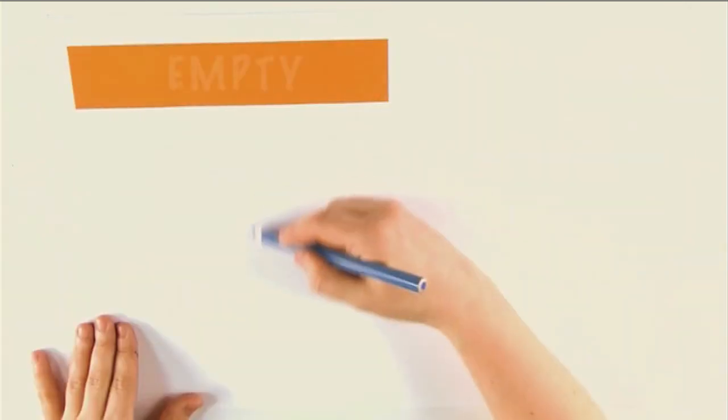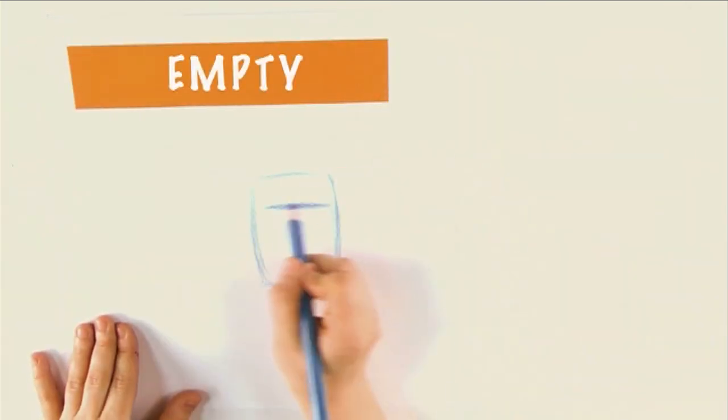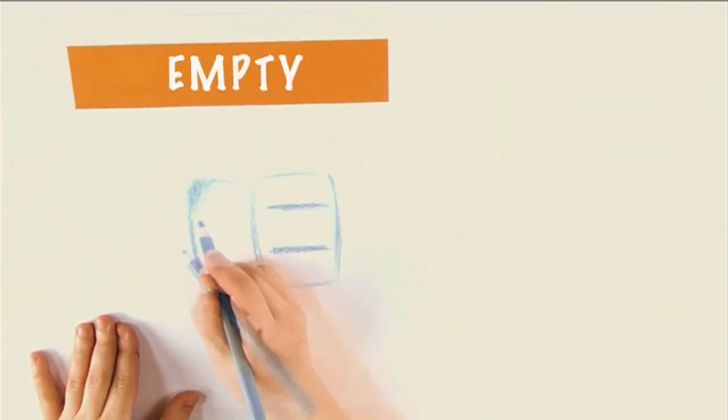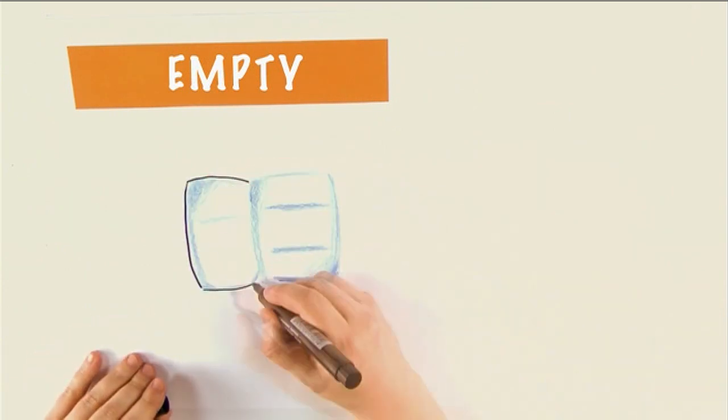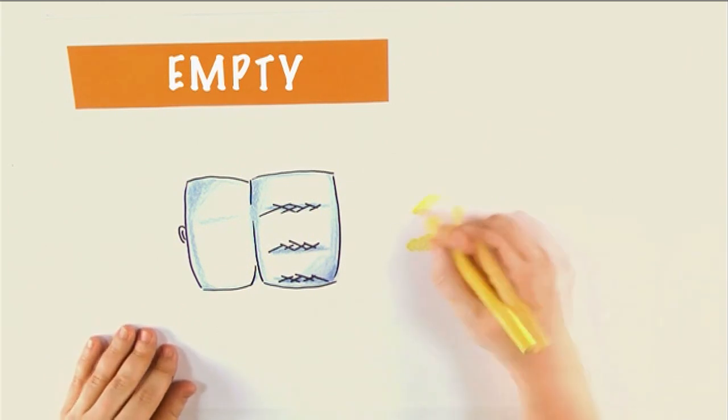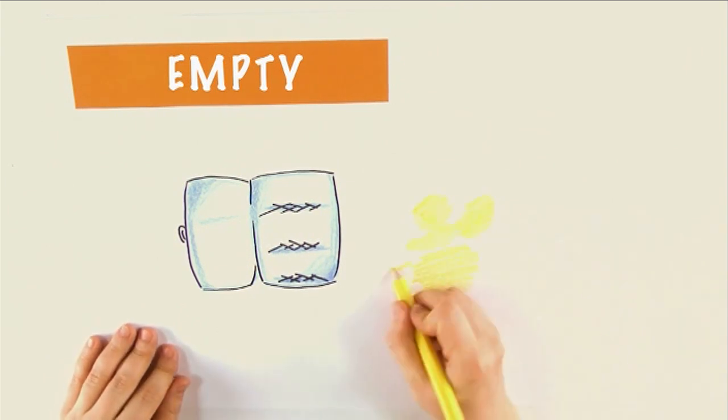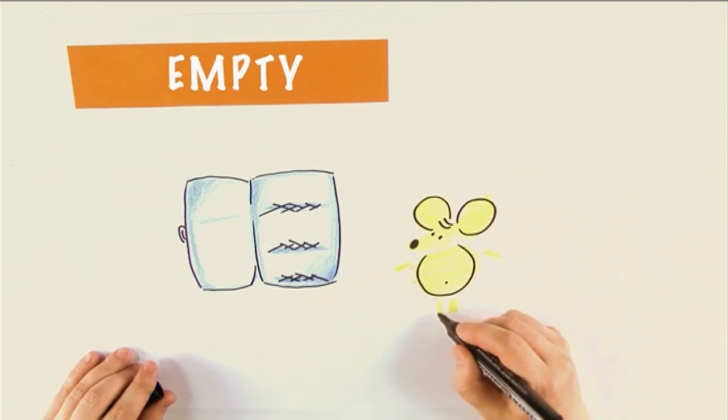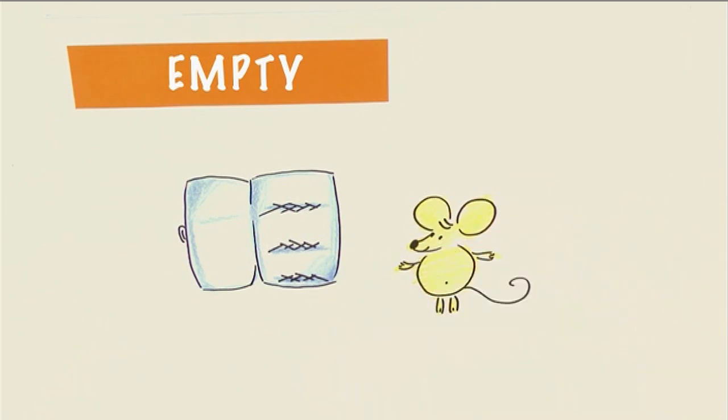In half an hour, the fridge was empty. Через полчаса холодильник был пуст. And little mouse looked like a ball. А мышонок стал похож на шарик. I'm full, squeaked little mouse. Вот это я хорошо покушал, пискнул мышонок.